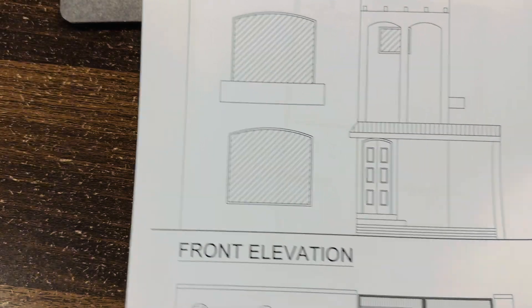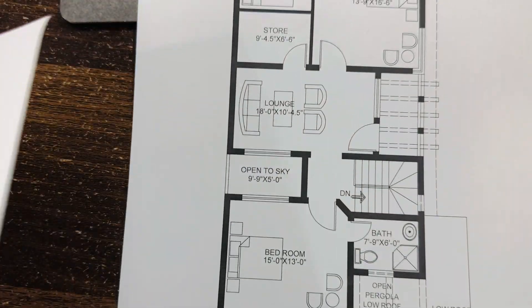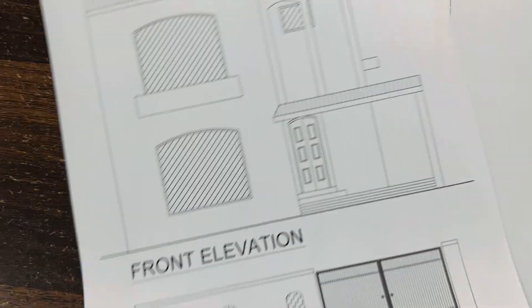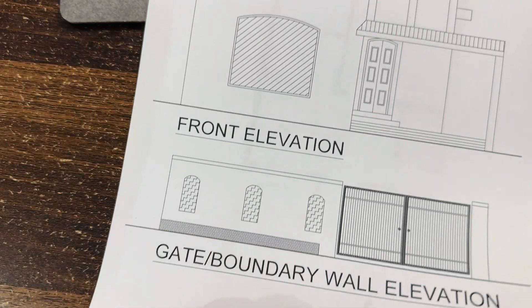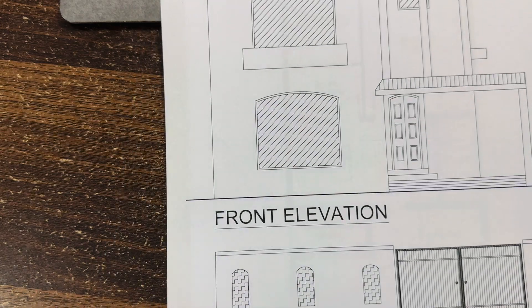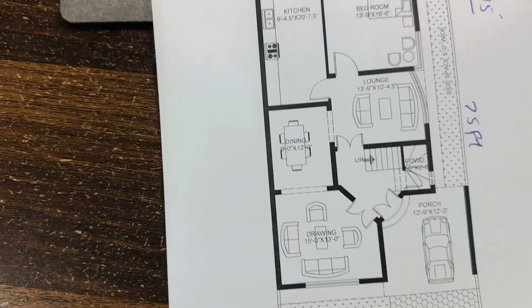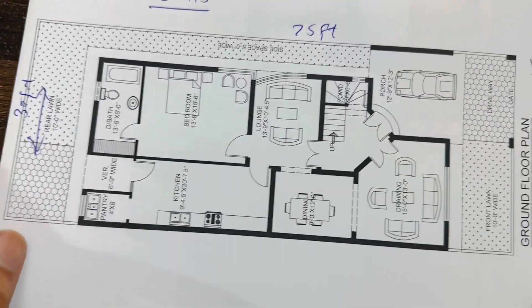This is the ground floor plan, the second one is the first floor plan, and the last one is the front elevation and the boundary wall. Now let me guide you in detail for this plan.